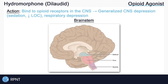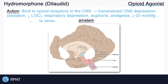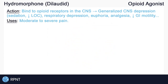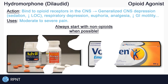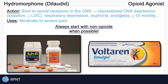Opioids can also cause feelings of euphoria, analgesia, or pain relief, decreased GI motility, and more. Hydromorphone can be used in the management of moderate to severe pain as an analgesic when a non-opioid analgesic is not effective. Always start with non-opioids when possible, due to the risk of addiction that comes with opioids.